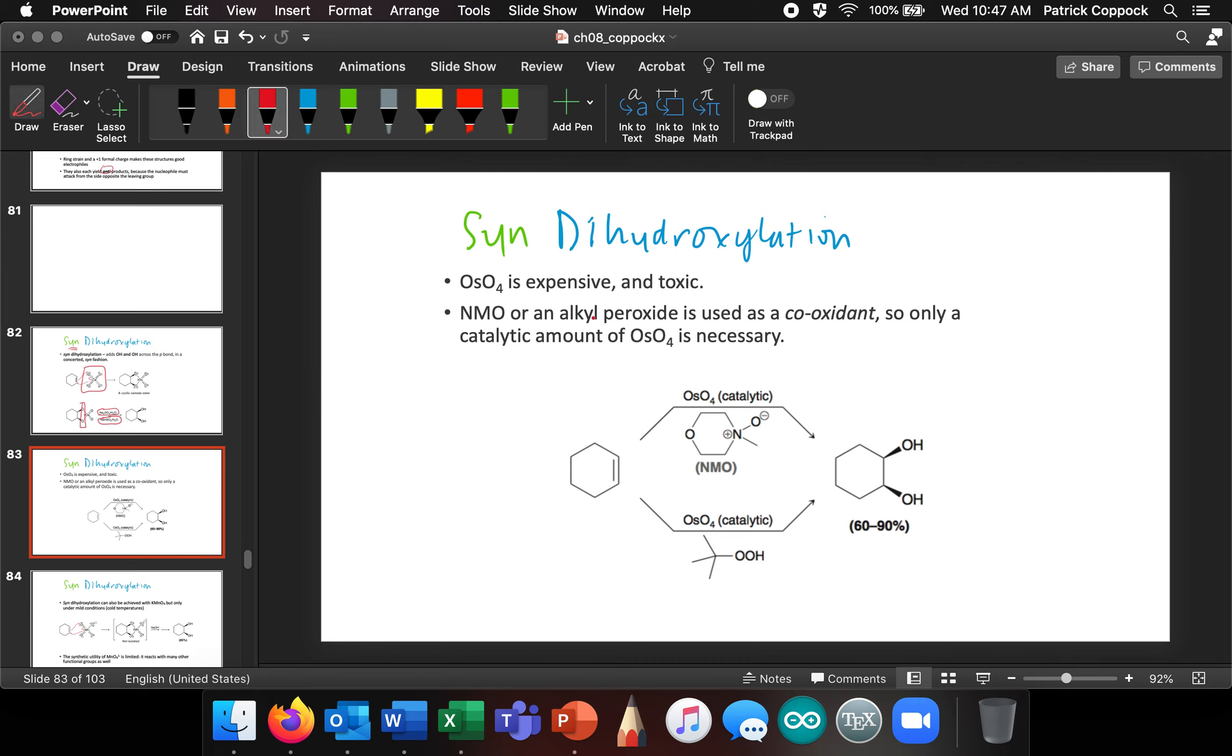And it's important to appreciate that, alternatively, since osmium tetroxide is expensive and toxic, we're going to use a catalytic amount of osmium tetroxide. And we're actually going to put some NMO in there. I don't think you're going to need to remember the structure of NMO.